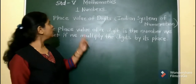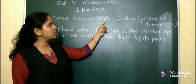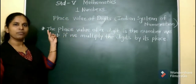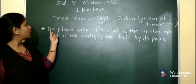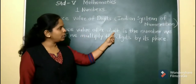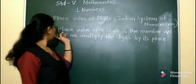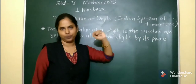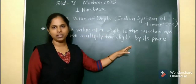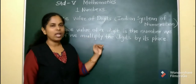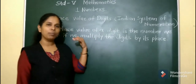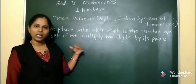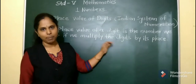Our next topic is place value of digits in the Indian system of numeration. The first point we are going to learn is: the place value of a digit is the number we get if we multiply the digit by its place. Place value is nothing but when we multiply the digit by its place, whatever answer we get, that is called the place value.